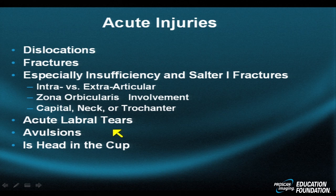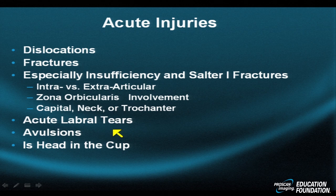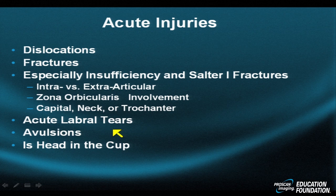In other words, is it intra-articular or extra-articular? Does it sit above the zona abicularis, which is defined in vignette number nine? The reflection of the capsule and everything above it is intra-articular; everything below it is extra-articular. You should define your fracture relative to the head or the capital portion of the femur, the neck, and the trochanter. You can even divide the trochanter up further into upper or supratrochanteric, intertrochanteric, and subtrochanteric.